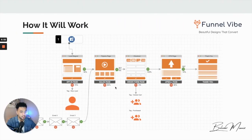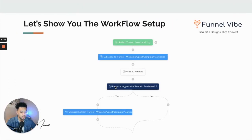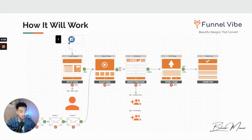I tried to make it super simple in this video and give you guys a general concept, because a lot of people know there's a workflow area in systeme.io and they know they can add tags, but sometimes they just don't know how to actually maximize them to create conversions. Hopefully this video helps. If you guys have any questions, make sure to message me on Facebook or email me at boulevard@funnelvibe.com.